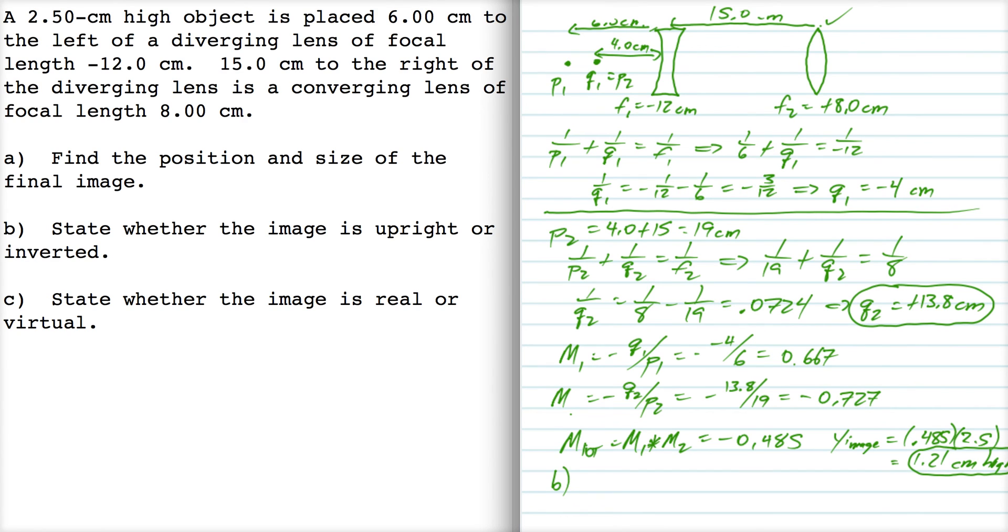Part B asks, state whether the final image is upright or inverted. Well, since the total magnification is negative, that means that the image is inverted. Anytime the magnification is negative, that's an indicator that the image is inverted.